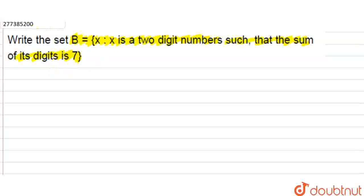So basically, what do we need to find? We have to write this set of two-digit numbers such that the sum of their digits is 7. The sum of the digits should equal 7.